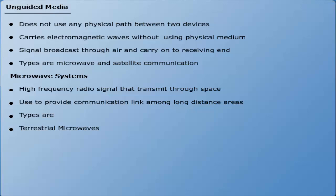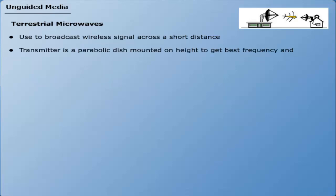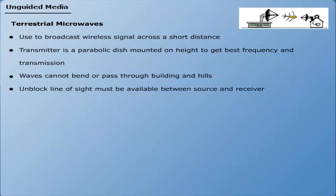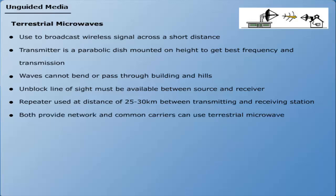Terrestrial microwaves are used to broadcast wireless signals across short distances. The transmitter is a parabolic dish mounted at height to get the best frequency and transmission. These waves cannot bend or pass through buildings and hills; therefore, an unblocked line of sight must be available between source and receiver. Repeaters are also used at distances of 25 to 30 kilometers between transmitting and receiving stations. Both private networks and common carriers can use terrestrial microwaves for audio and television transmission.